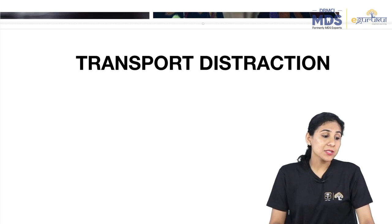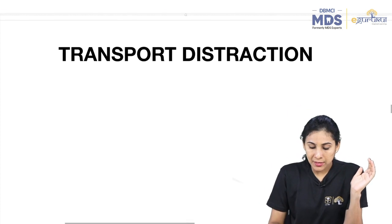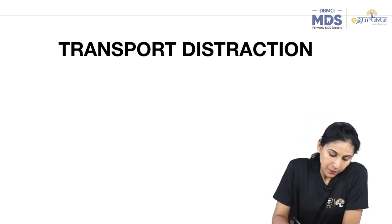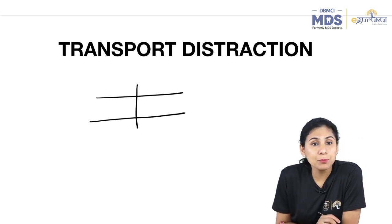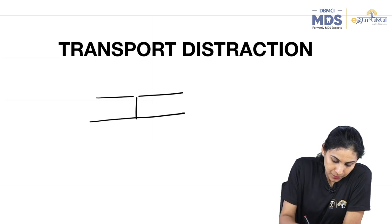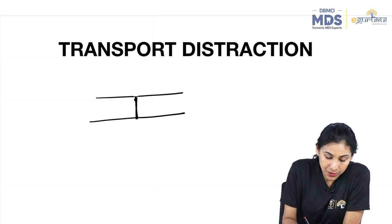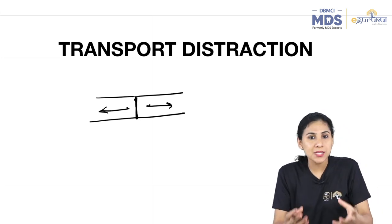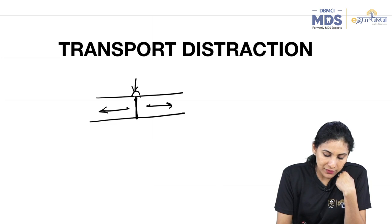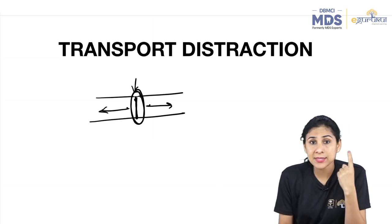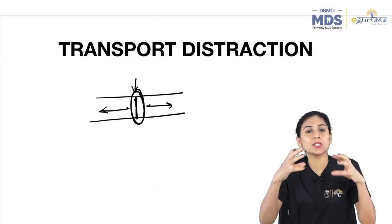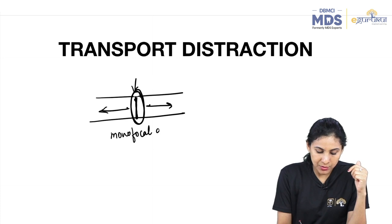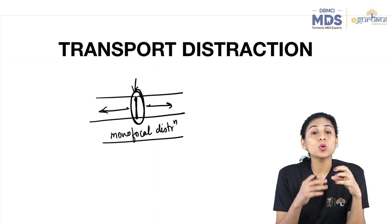Coming to transport distraction — this also relates to the focus of distraction. You can do two types. You can cut the bone, fix the distractor, and move the two bones apart — this is what we have discussed so far. Only one site is where tension is happening. This is called monofocal distraction — only in one site, there is tension happening.